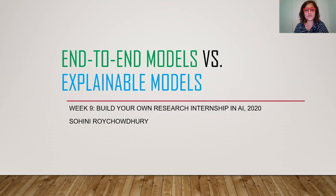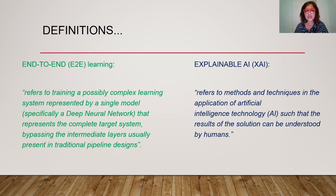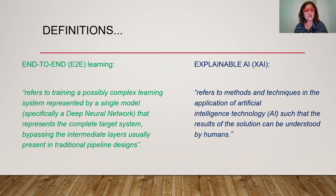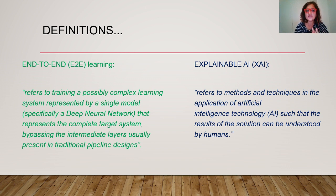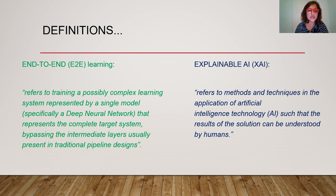We are at week nine of Build Your Own Research Internship in AI, and today we are reviewing end-to-end models versus explainable AI models. We'll start with definitions. An E2E or end-to-end model refers to training a possibly complex learning system represented by a single model — like a deep learning neural network — that represents the complete target system by bypassing the intermediate layers usually present in a traditional pipeline design.